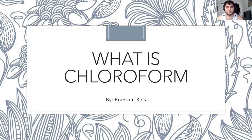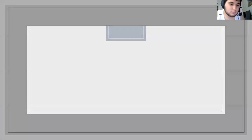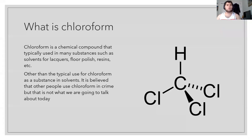Hello, my name is Brandon Rios and my topic for this project is what is chloroform, and more importantly what are its uses, a little bit of the basic chemical makeup, and the side effects it has on the human body. Chloroform is a chemical compound that we typically find in substances meant for solvents, such as lacquers for polish, resins, etc. We'll talk more on this in a later slide.